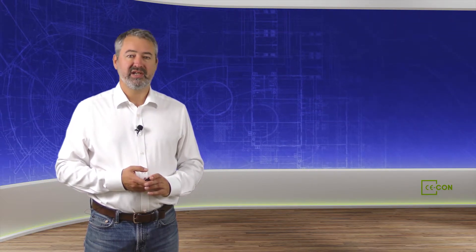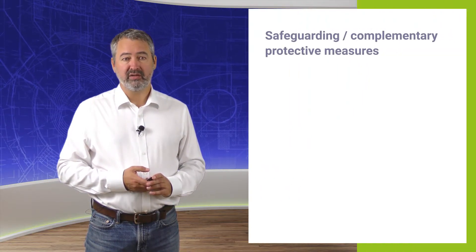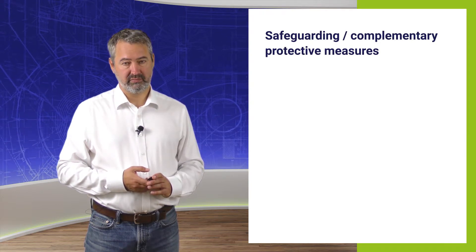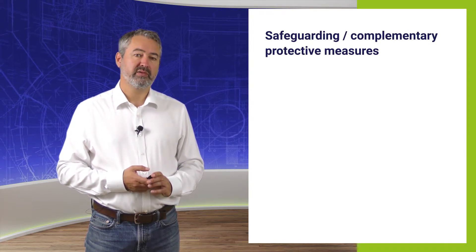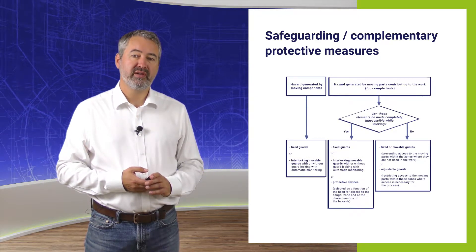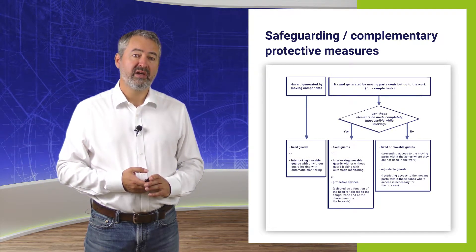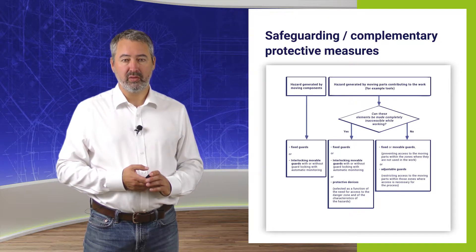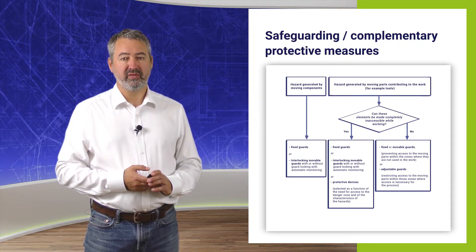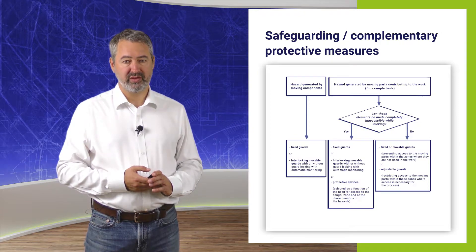If not all hazards could be eliminated, further protective measures should be selected. In the next and second step, the safeguarding and complementary protective measures are selected. The ISO 12100 standard provides a flowchart from which a fundamental distinction is made as to whether hazards are caused by moving transmission or drive elements, or by moving parts of the working process of a machine.